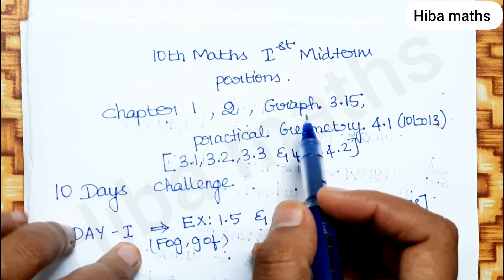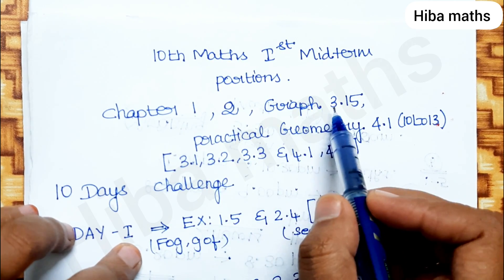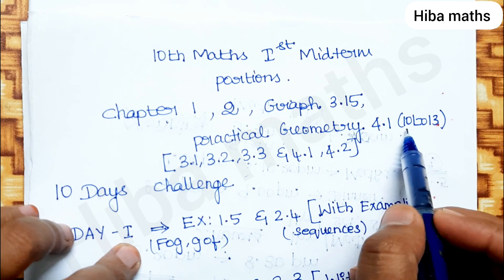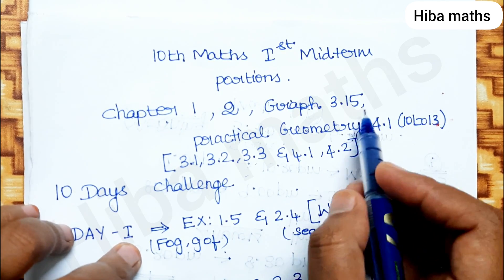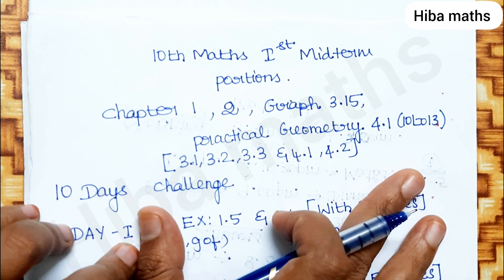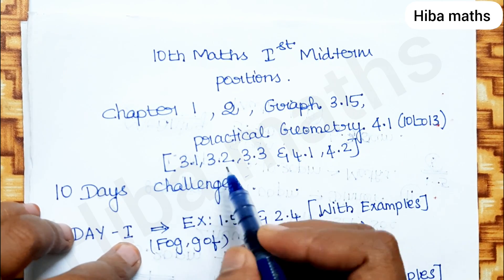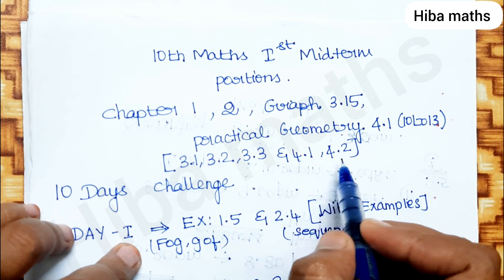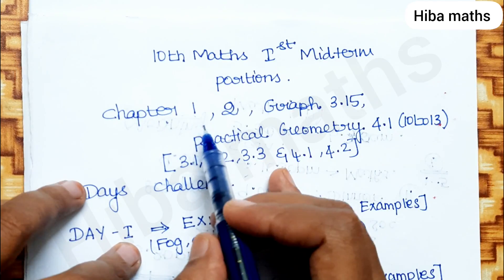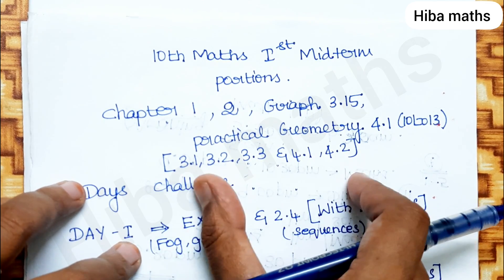The first midterm exam covers chapter 1, chapter 2, chapter 3 (exercise 3.15), and practical geometry 4.1. For exercises 10 to 13, if you have an extra school, please note this is for the general government school. There are exercises 3.1, 3.2, 3.3, 4.1, and 4.2 in the brackets. First and second chapters are separate; the target focus is the 3rd and 4th chapters.